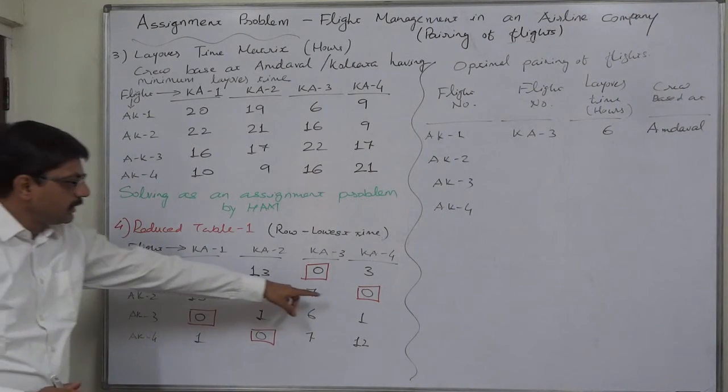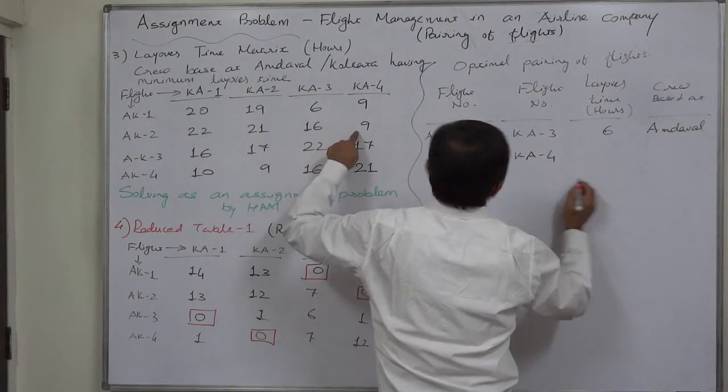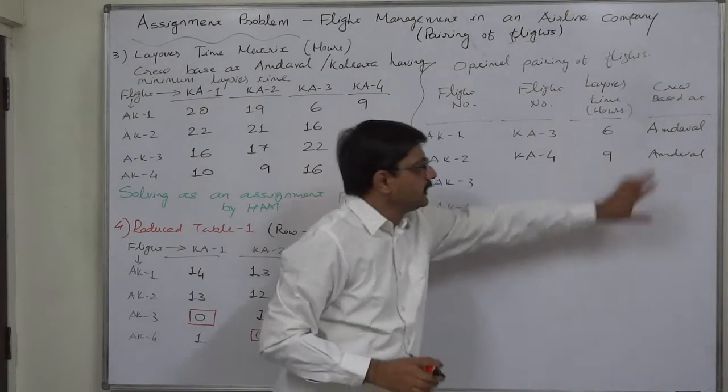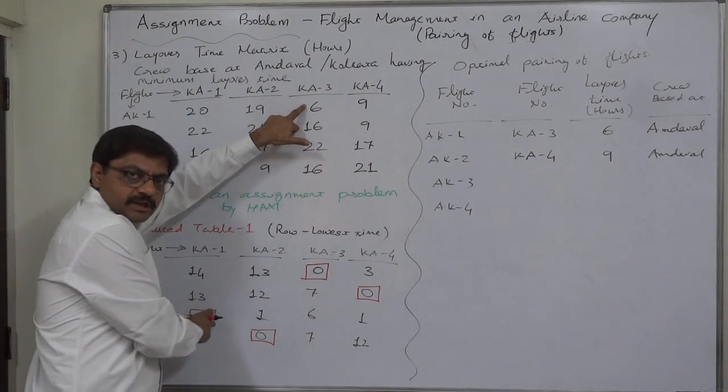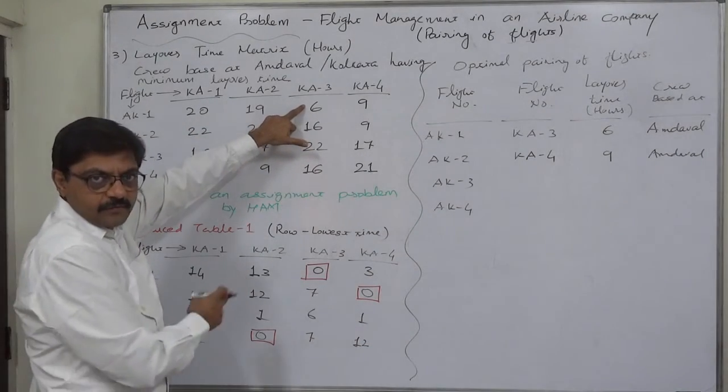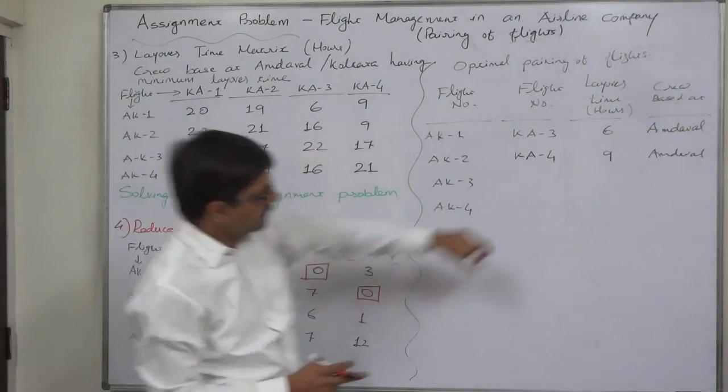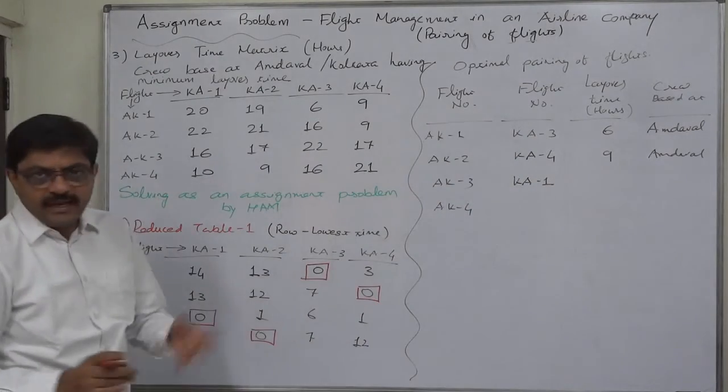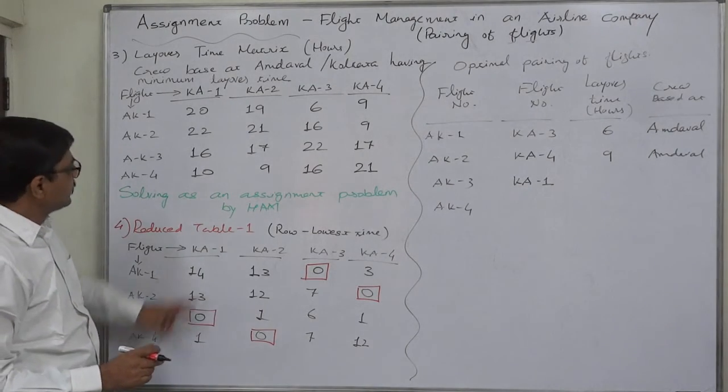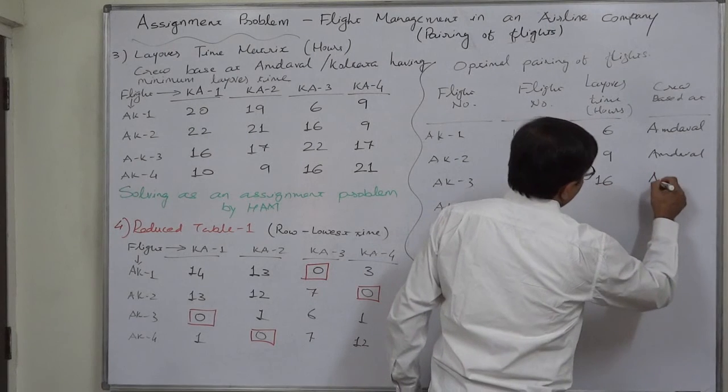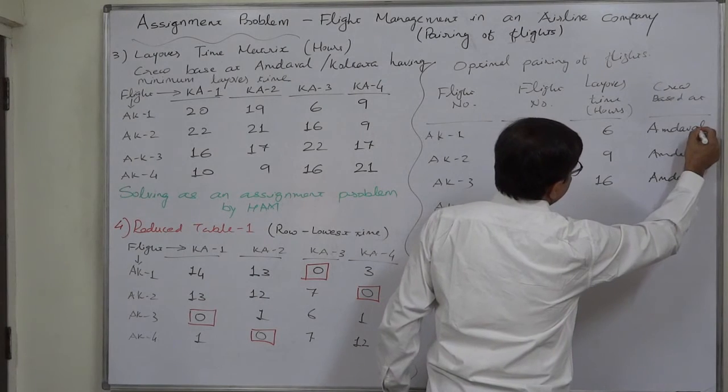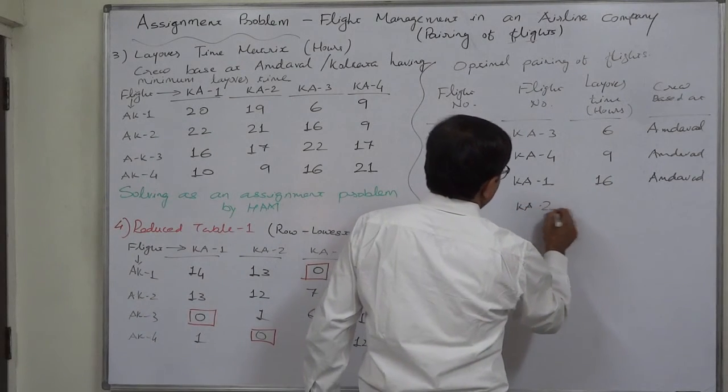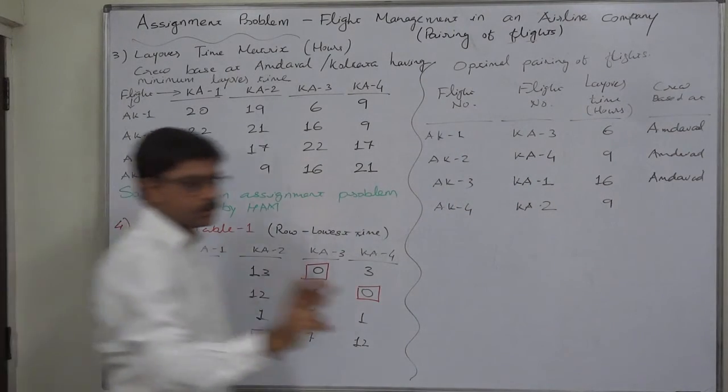Now, AK-2 becomes KA-4. The minimum layover time is 9 hours. And according to previous tables, it is also based at Amdawar. How can we write this comment? Check, 6 selected from first table based at Amdawar or second table based at Kolkata. It is from the first table. Similarly, 9 was also selected from the first table based at Amdawar. Now, AK-3 becomes KA-1. In case of equal layover time, you can write name of any city. Yes, it is 16, and first table, Amdawar. AK-4 becomes KA-2, and layover time is 9 hours. And that was from the second table, that means crew based at Kolkata.